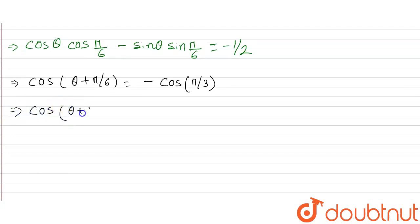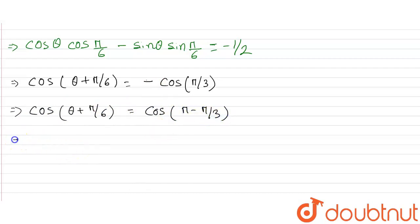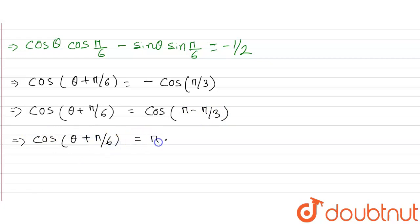So, cos(θ + π/6) equals to minus 1/2. Cosine is minus, so we can write this as cos(π minus π/3). Therefore, cos(θ + π/6) equals to cos(π minus π/3), which is cos(2π/3).